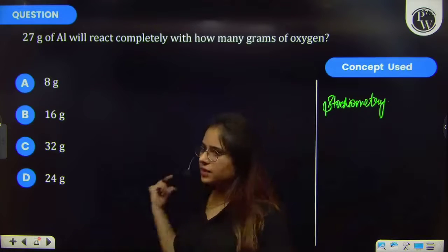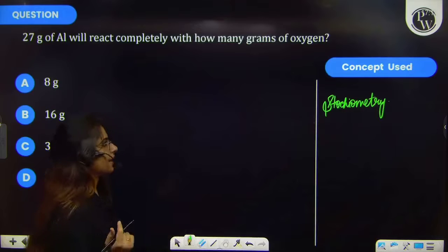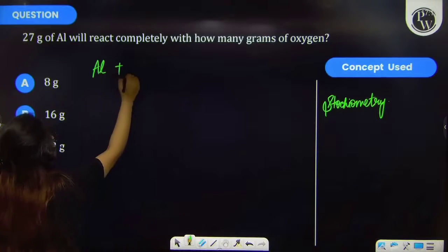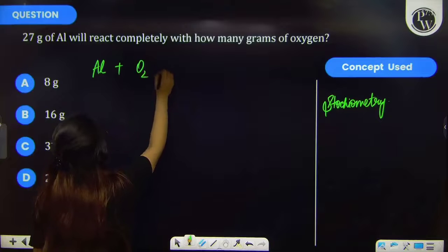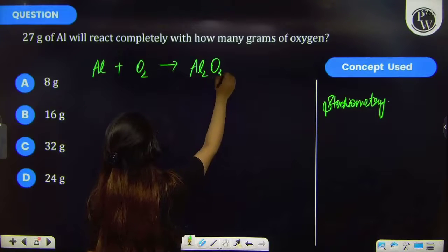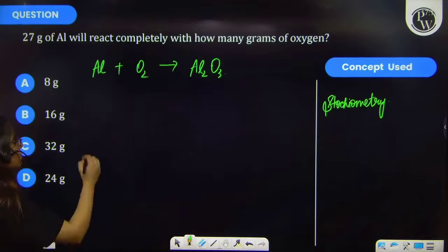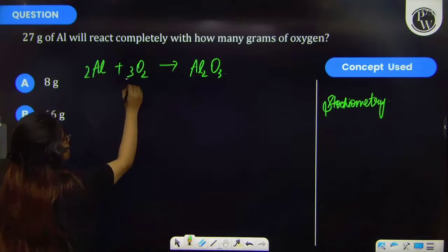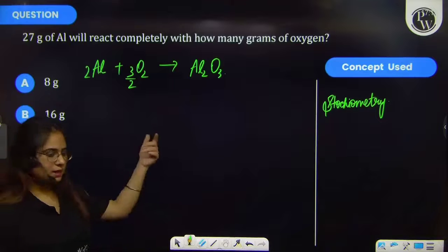Now let's firstly write the equation of this reaction. Aluminium is reacting with oxygen and it will give Al2O3. Now let's balance the equation. So this will become 2Al and it will be 3/2 O2. So the equation is balanced now.